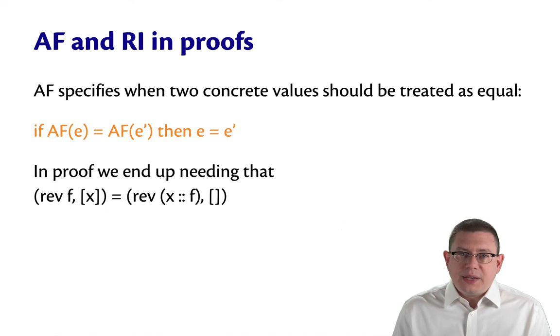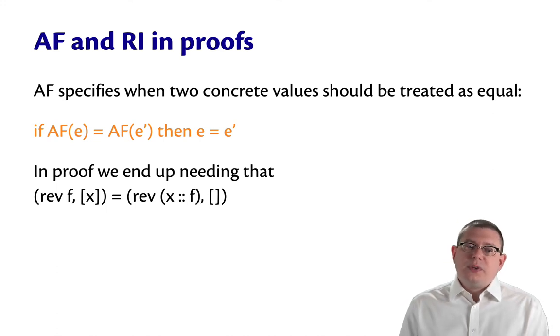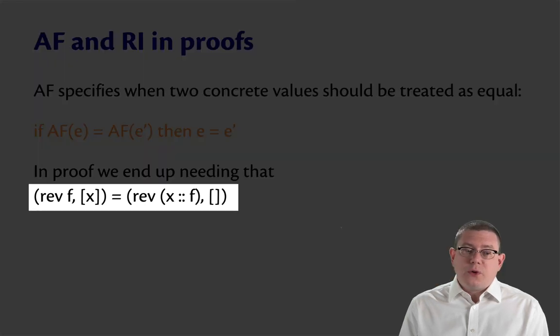The other place that's really interesting in those proofs is the abstraction function. We eventually reach a place in those proofs where we need to show that two queues are equal, but actually, they aren't the same two lists. We end up needing to show that the reverse of f, the front list, followed by a backlist that's just the singleton element x, is equal to the reverse of x cons f, followed by an empty backlist.